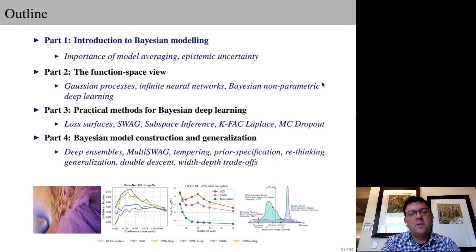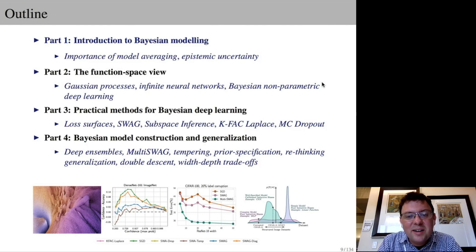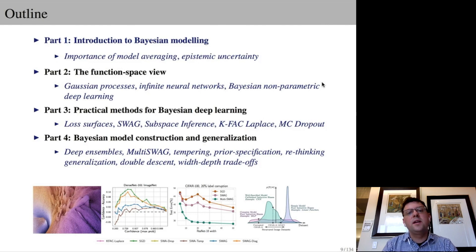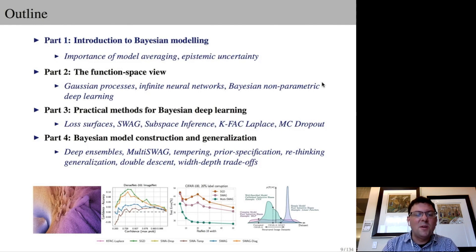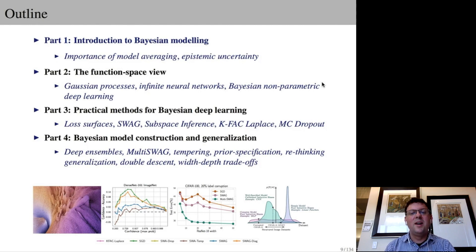This tutorial will have four parts. Part one is about foundations of Bayesian machine learning, particularly how Bayesian methods could impact deep learning. In part two, we'll consider a functions-based perspective of machine learning. In part three, we'll consider several practical methods for modern Bayesian deep learning — the goal being to exemplify foundational concepts with several modern approaches. In part four, we'll consider Bayesian model construction and generalization, including deep ensembles and their connection with Bayesian marginalization, the multi-swag approach which marginalizes within multiple basins of attraction, tempering, prior specification, rethinking generalization, double descent, width-depth trade-offs, and a variety of other topics.